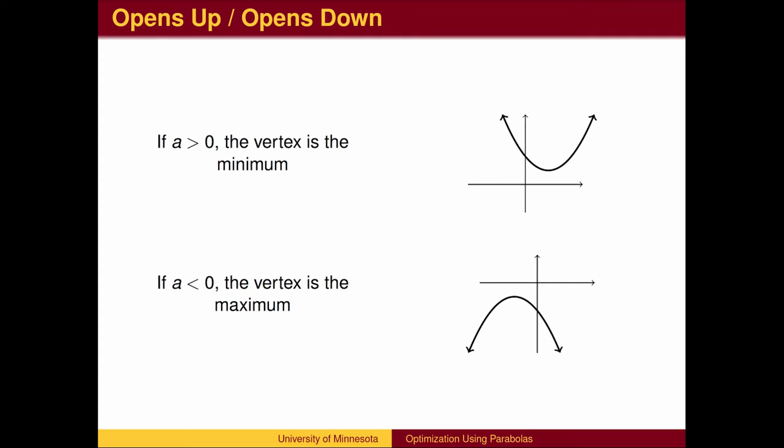If the coefficient on x-squared is positive, then the parabola opens upward and the vertex is the minimum. If the coefficient on x-squared is negative, then the parabola opens downward and the vertex is the maximum.